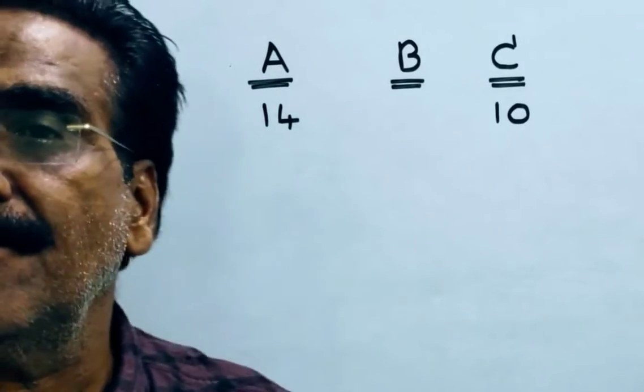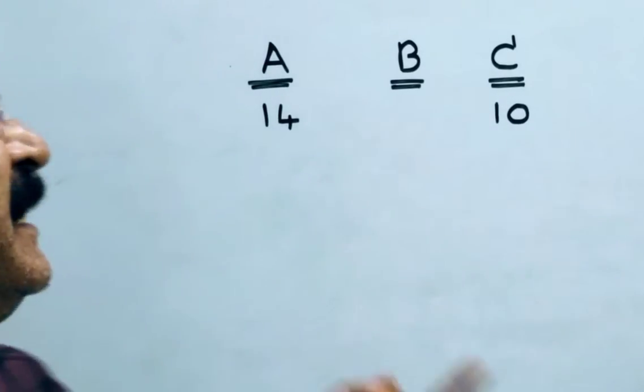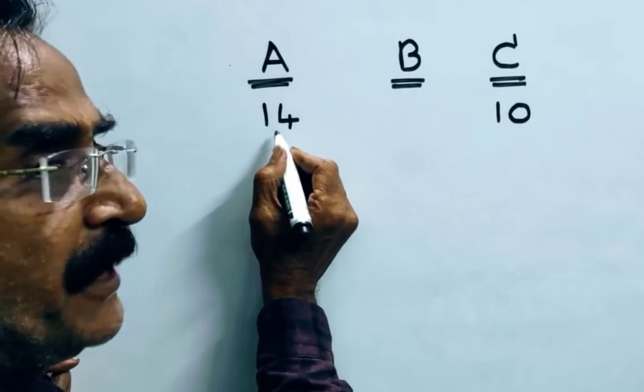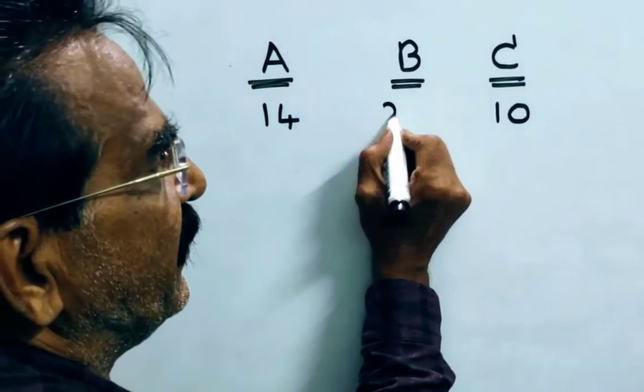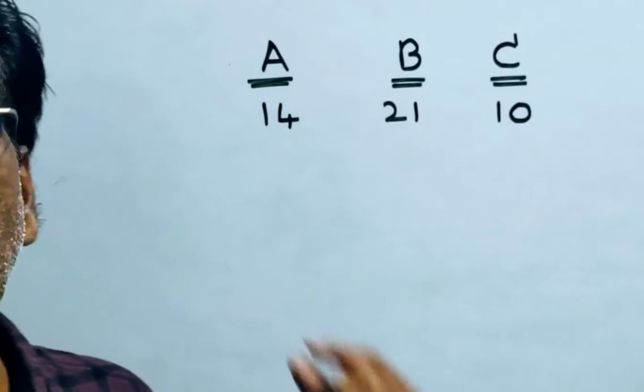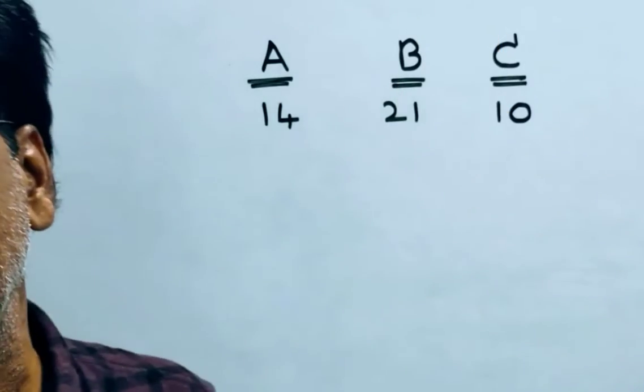And B is 50% more efficient than A. 50% more efficient means 40 plus 7, 21. So, A can do 14 units of work per day, B 21 units and C 10 units.